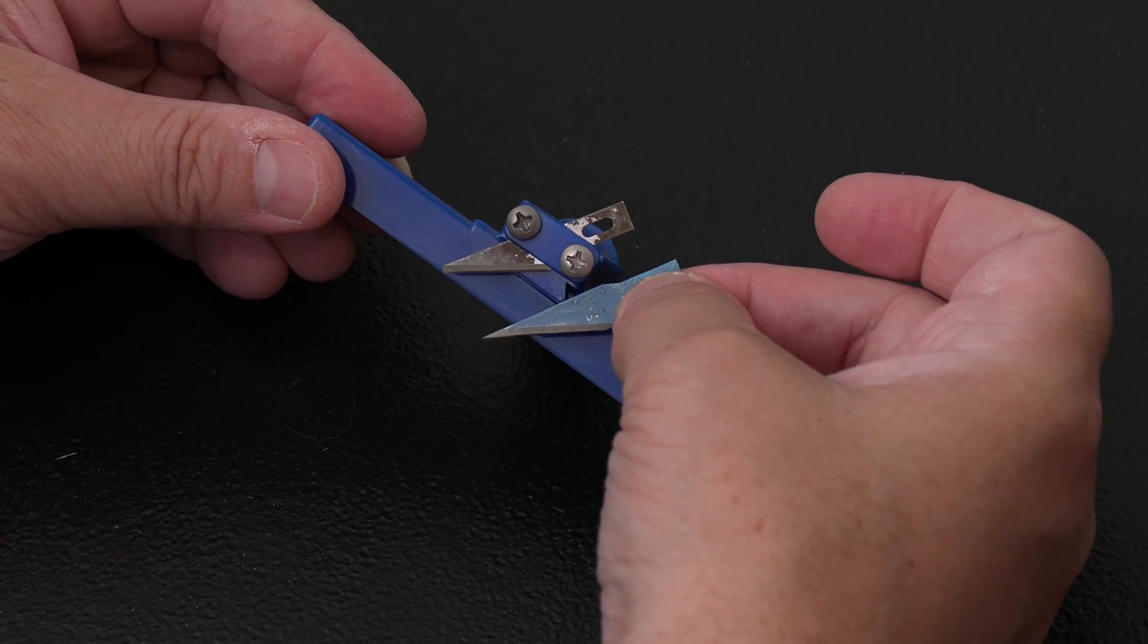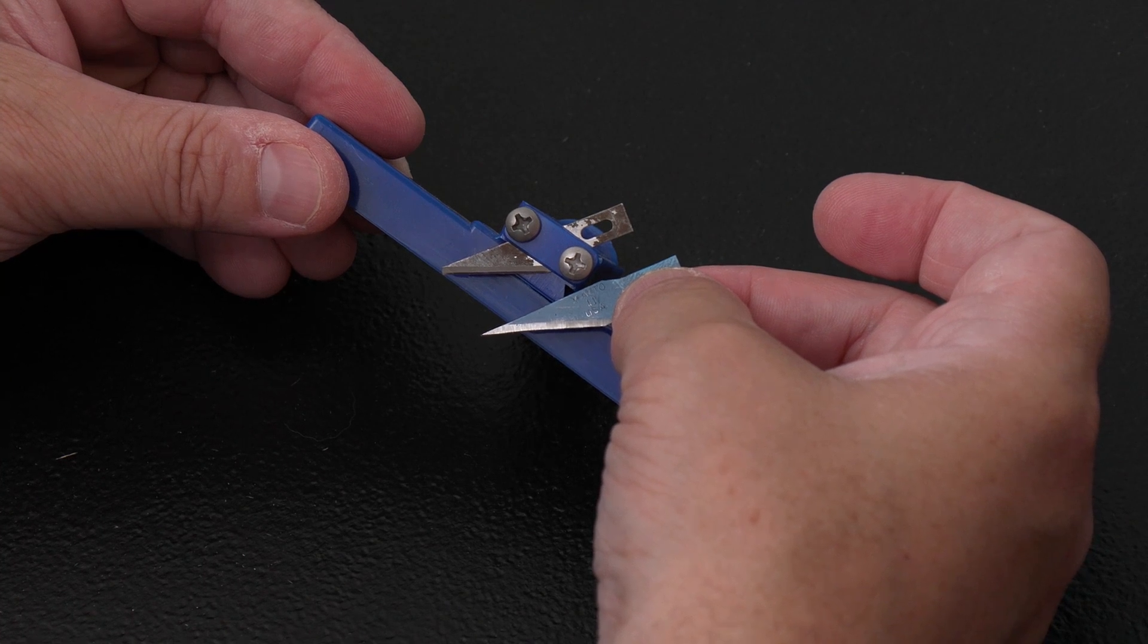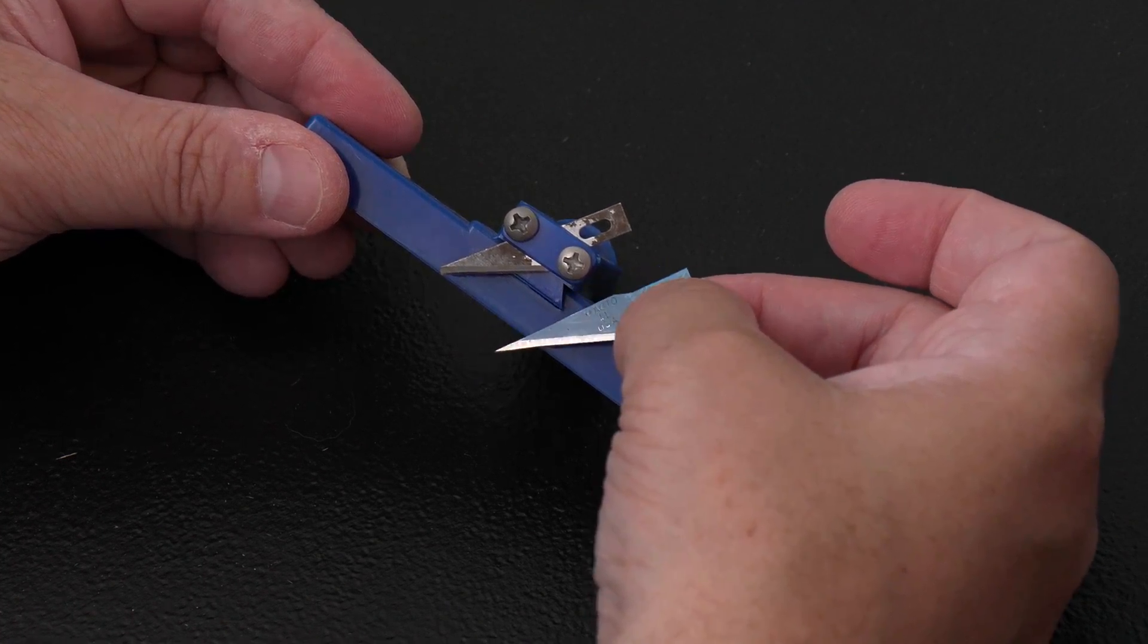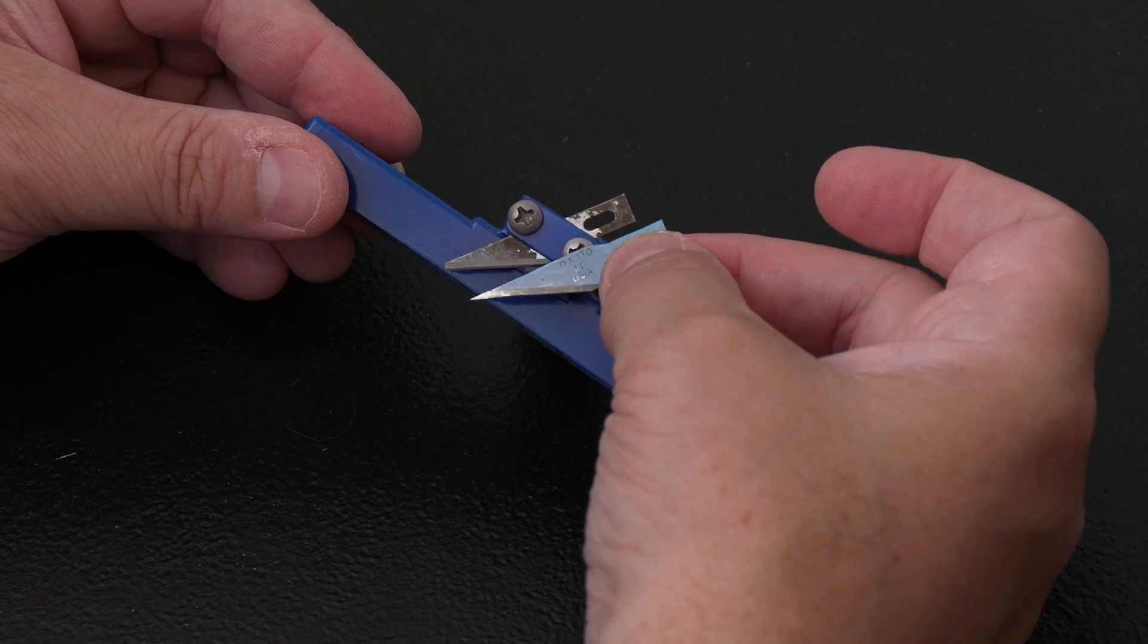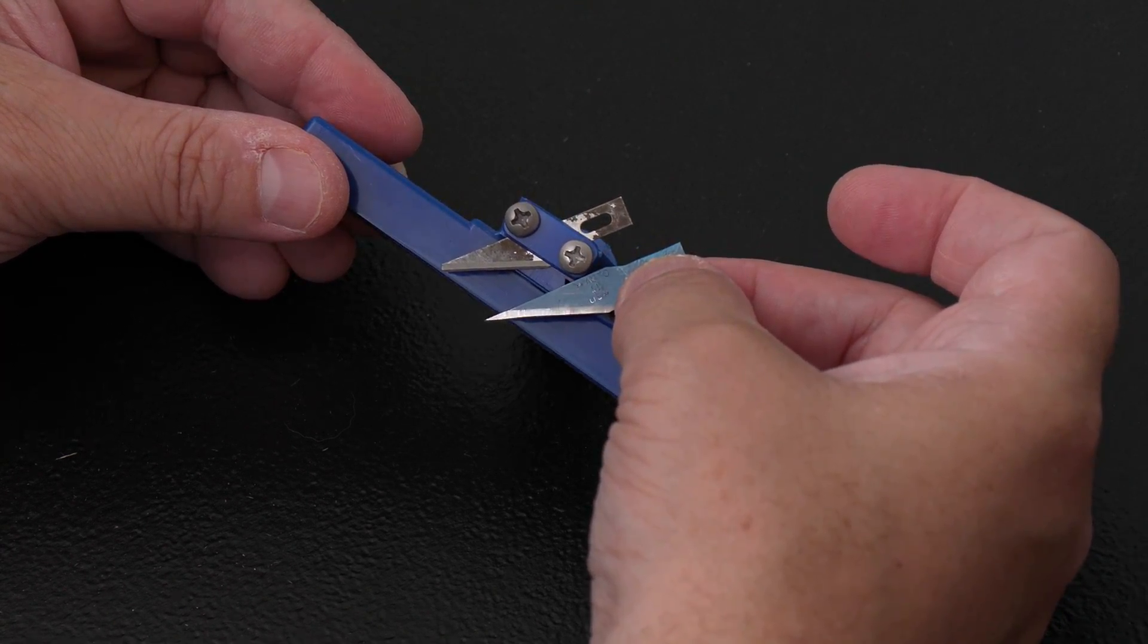One quick tip regarding the blade. I recommend using a pair of pliers and breaking off the very tip of the X-Acto blade before putting it in the tool. This is the effect of making the tip much more rigid and less prone to wandering when cutting.